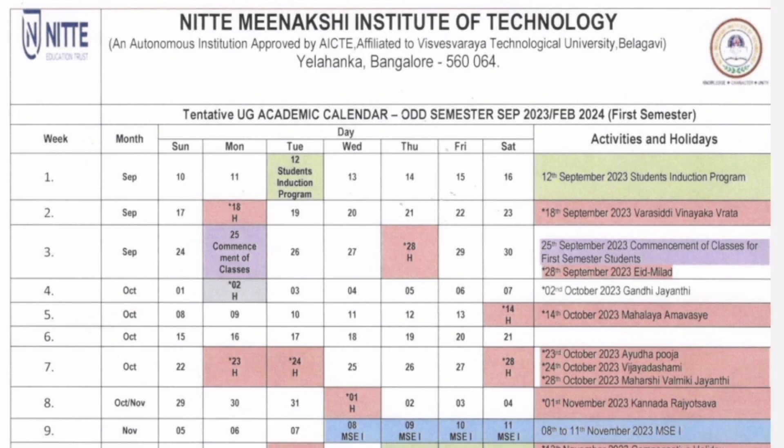If you remember these terminologies, I will explain the plan for Niti Meenakshi for the first semester. You can see different weeks, months, and days in the calendar. On the right side, it lists all activities and holidays. The Niti Meenakshi induction program is starting from 12th September — so classes are not starting on the 4th, but the student induction program begins on 12th September. After that, 18th September is a holiday for Varasiddhi Vinayaka Vradha. Regular classes commence from 25th September.